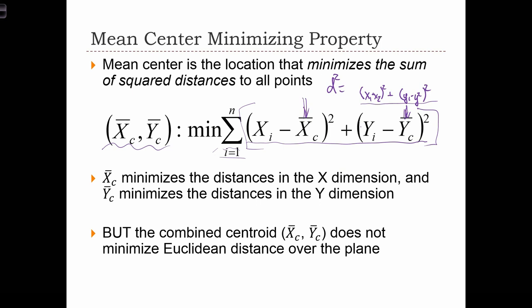Now, the mean center on each component dimension actually minimizes the distances in that direction, in that dimension. So xc, x bar c, minimizes the distances in the x dimension.